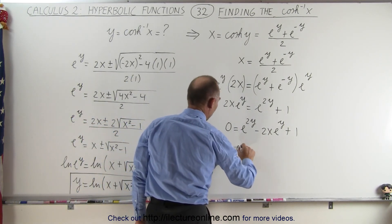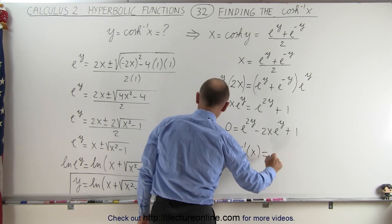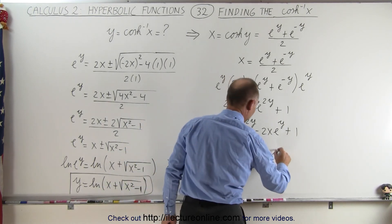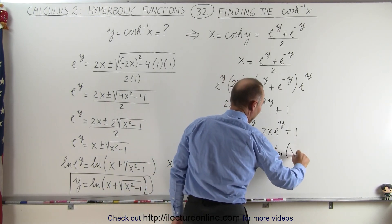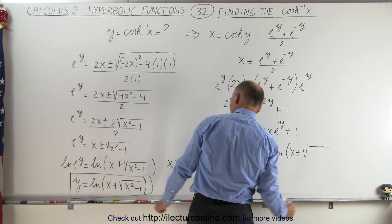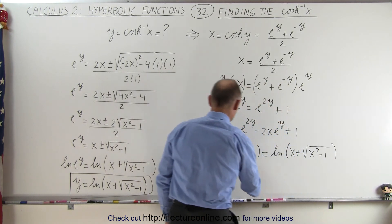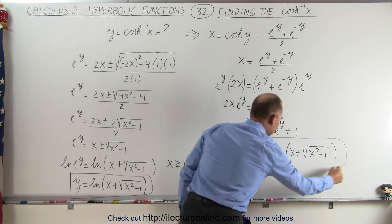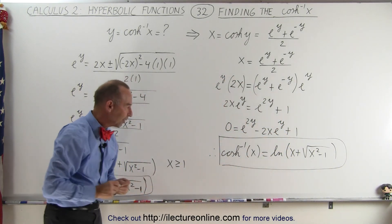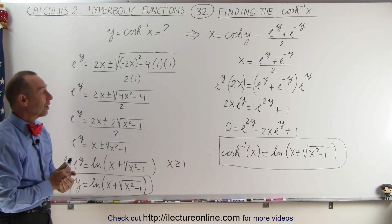therefore, that the hyperbolic cosine of x must therefore equal what we have here, which is the natural log of x plus the square root of x squared minus 1. And there you have it. That is how we now calculate the inverse hyperbolic cosine.